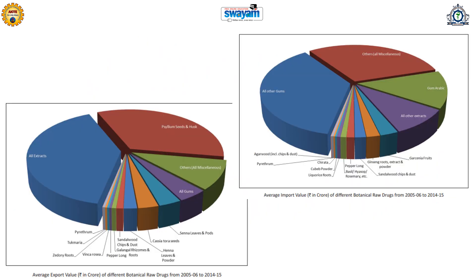This slide presents the average export value and average import value of some medicinal plants and derived products. There is a good export value for medicinal plant extracts, as well as psyllium seeds, senna leaves, Vinca rosea, Piper longum, cassia tora seeds, and hina leaves.